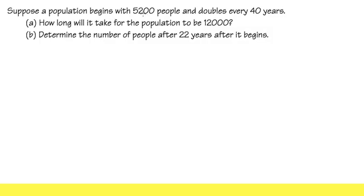Suppose a population begins with 5,200 people and doubles every 40 years. We are going to find out how long it will take for the population to be 12,000. First of all, let's come with the right equation.